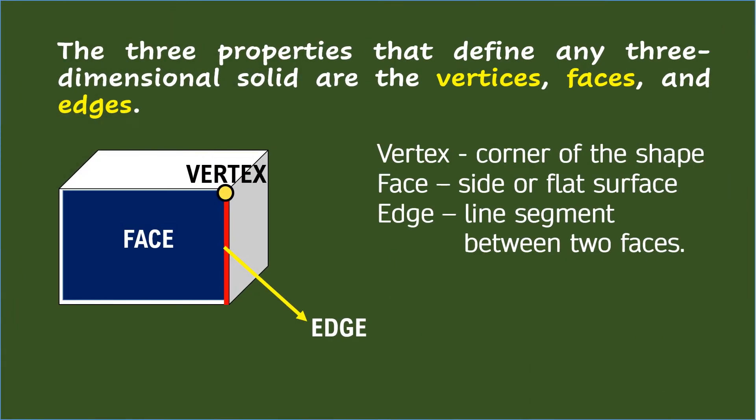The three properties that define any three-dimensional solid are the vertices, faces, and edges. Vertex is the corner of the shape, where three or more edges of a solid meet. Face is the side or flat surface of a solid figure — it can be a square, a rectangle, a triangle, or a circle. Edge is the line segment between two faces of a solid.